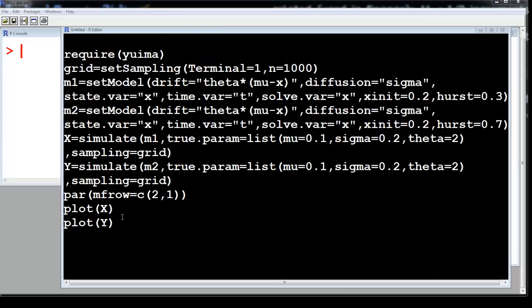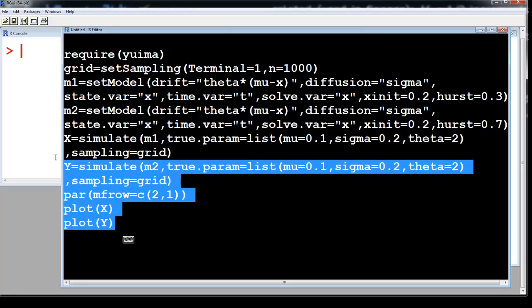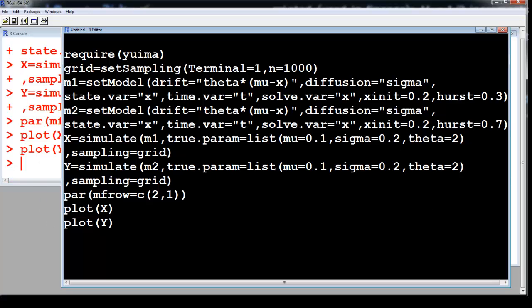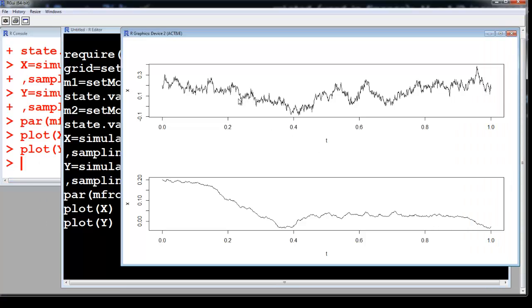So we copy paste this code from the description of the video. So we are going to just select this entire code and hit the run button. And we get, so this is x and this is the second one which is y.